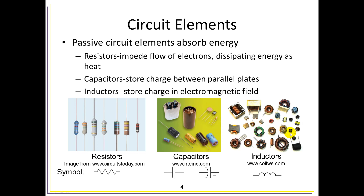Inductors are coils wrapped around a core. Typically they come in a torus or donut shape, and you'll see various wires wound around that core. These are the fundamental building blocks of electric motors and can also be found in electromagnets and relays. This is the schematic symbol for an inductor down here.